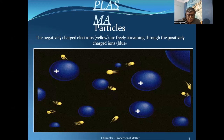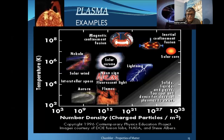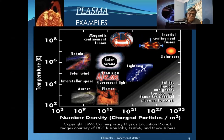In plasma, all ions are free to move. There is no attractive force between positive and negative ions. Valency is not very important in plasma. Examples include magnetic confinement fusion, nebula, solar corona, solar wind, interstellar space, lightning, and even neon signs. The density of plasma varies between 10³ and 10³³. Temperature varies from 100 degrees to 10⁸ degrees.